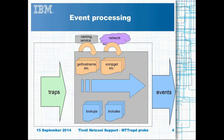In this diagram more detail is given as to how the probe processes the events. The probe reads the lookups and includes on startup, and can re-read these files when a HUP signal is sent. Whilst processing events, the probe may need to get naming details from the operating system, or send SNMP get requests out to the network.